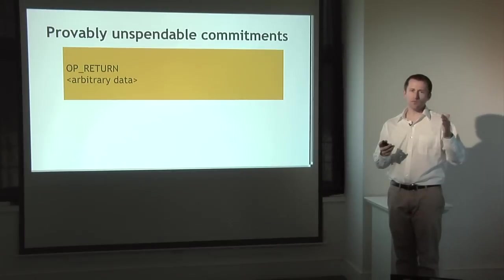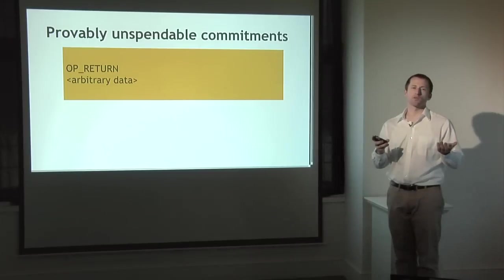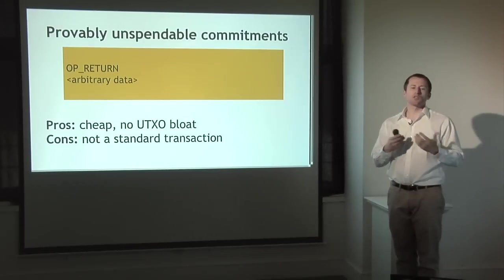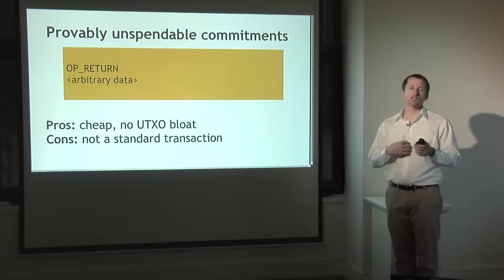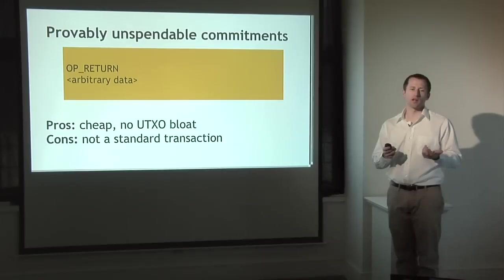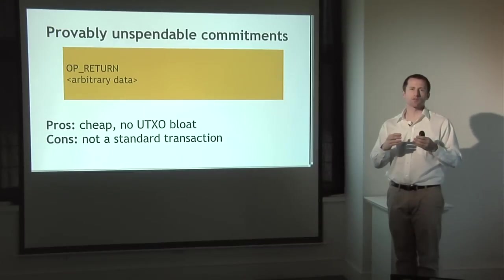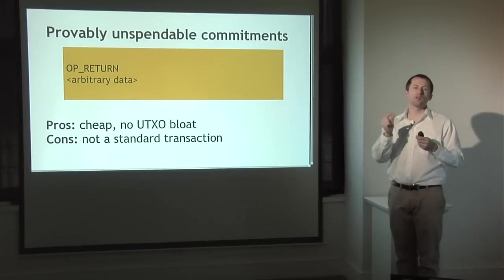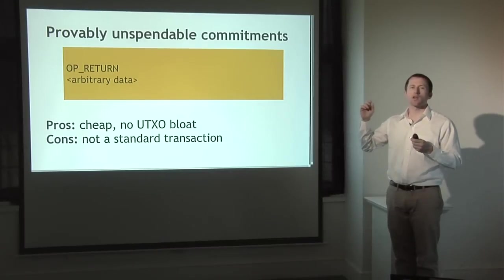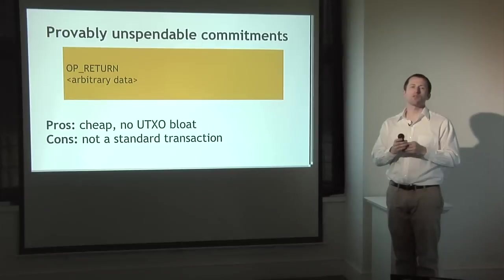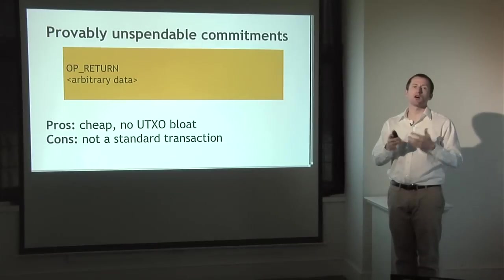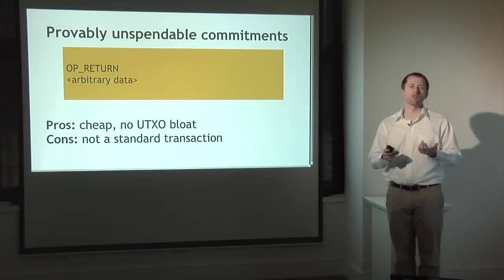The preferred way now is with a provably unspendable output, including your data in the script. This uses the OP_RETURN opcode, which can never be satisfied, allowing you to push some arbitrary data. This is cheap, with no bloat in unspent transaction outputs — you only lose a little bit of money each time. The downside is it's still not a standard transaction and won't be relayed by default. There are actually startups that collect many people's commitments into a large Merkle tree and publish one unspendable output with all the day's commitments, amortizing the cost.